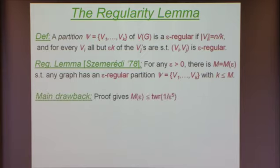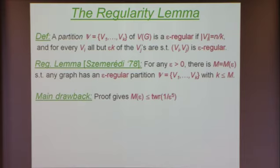Since I want to try to give you the entire proof, I will not go over the numerous applications of the regularity lemma. By now it's probably one of the most important tools in extremal graph theory, if not the most important. But the main drawback is that any quantitative bound we get depends on the function M of epsilon, and the bound from the proof is given by a tower of exponents of height polynomial in 1 over epsilon.